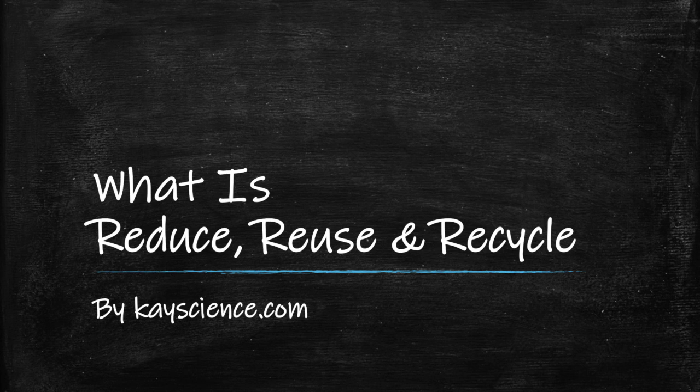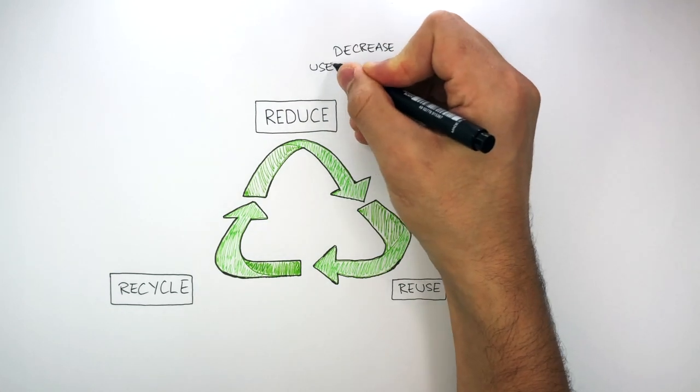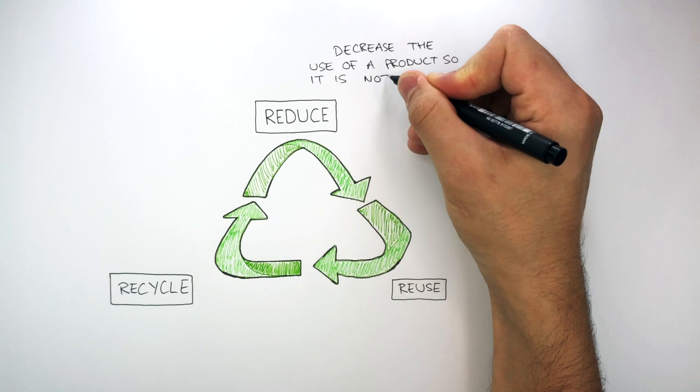What is reduce, reuse and recycle by kscience.com. These arrows represent reduce, reuse and recycle, where reduce means to decrease the use of a product so it is not overused.